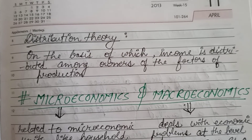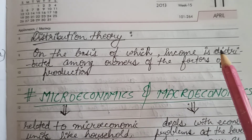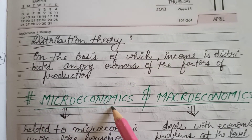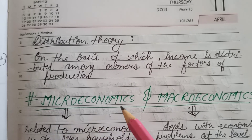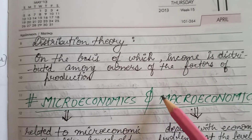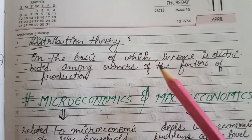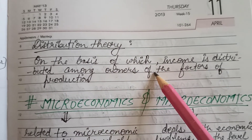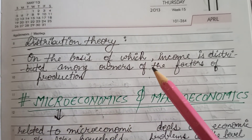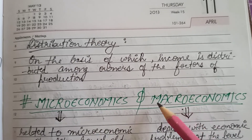On the basis of this, distribution theory means how income is distributed among the owners of the factors of production — providing rent to landowners, wages to labor, interest to capital providers, and profit to entrepreneurs. This income is distributed by the production sector to the household sector, because the household sector provides factor services to the producer sector, which enables the production activity. The production activity is not possible without these factors of production.